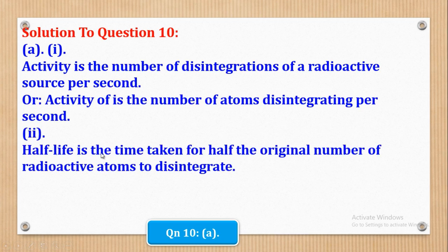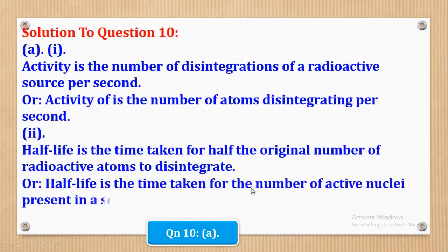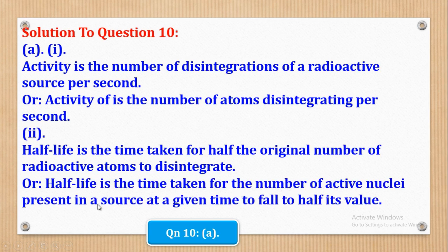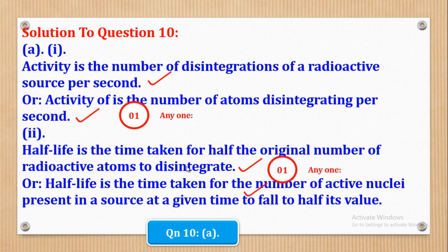Roman 2, we can say that Half-Life is the time taken for half the original mass of radioactive atoms to disintegrate. Or you can also say that Half-Life is the time taken for the number of active nuclei present in a source at a given time to fall to half its value. So it's the same only that the English changes. Basically that's what they wanted. Now let's see how marks could be awarded. So correct definition, that would be 1 mark for Roman 1 and also same applies to Roman 2, that is 1 mark.